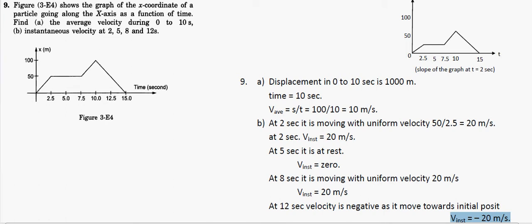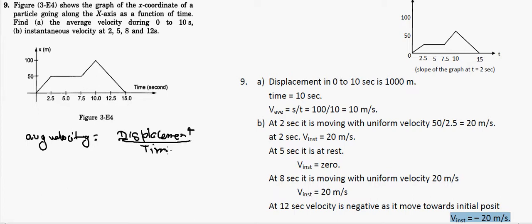Question number nine shows the graph of the X coordinate of the particle along the X-axis as a function of time. We need to find the average velocity during 0 to 10 seconds and the instantaneous velocity at 2, 5, 8, and 12 seconds. For finding the average velocity, we have to find the displacement divided by the total time, and the time given is 10 seconds.